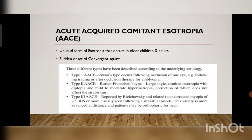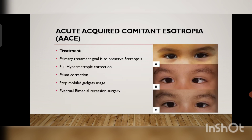Coming to the treatment goals of AAC — the primary treatment goal is to preserve stereopsis. Try to give anti-suppression therapy and develop the stereopsis. Give full hypermetropic correction, prism correction if required, and vision therapy exercises to develop the stereopsis. Computer games can help improve binocular function, and the child should completely stop using mobile phones and gadgets.